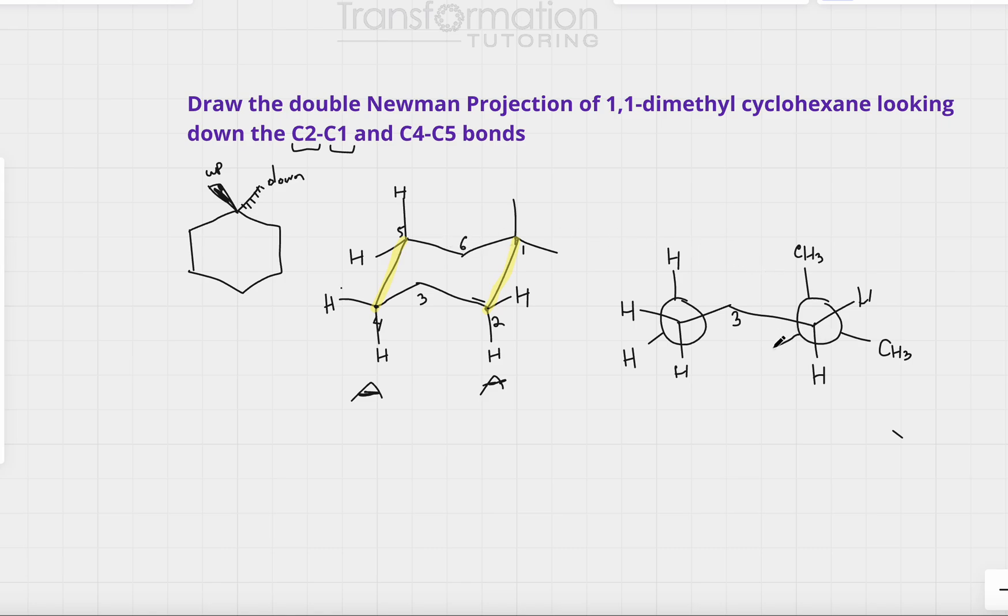I actually forgot to draw the third substitution for carbon number 5. So carbon number 5, it has a hydrogen on top, hydrogen to the left. And it also has another carbon going to the right. So going here. And that's my carbon 6. So again, carbon 5 has up hydrogen, hydrogen to the left. And it's connected to carbon 6.